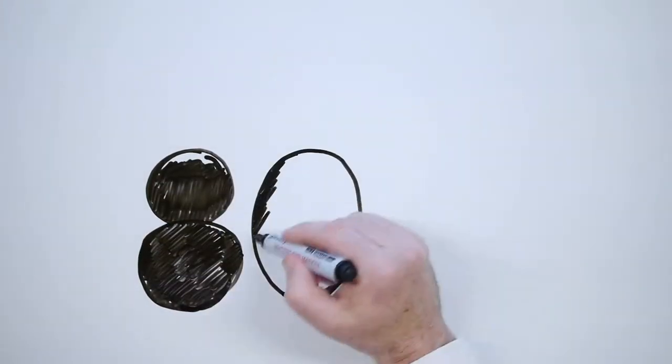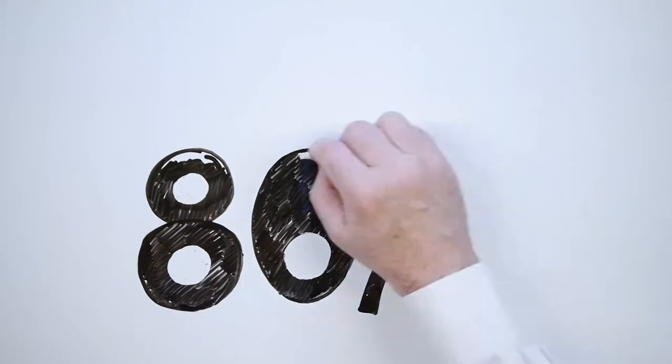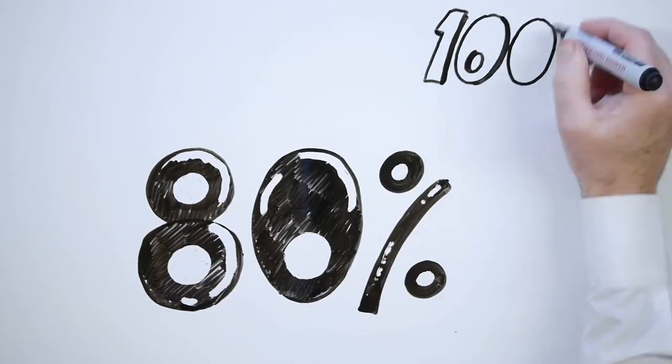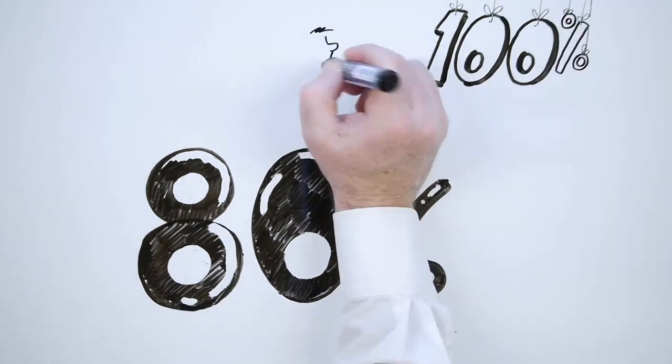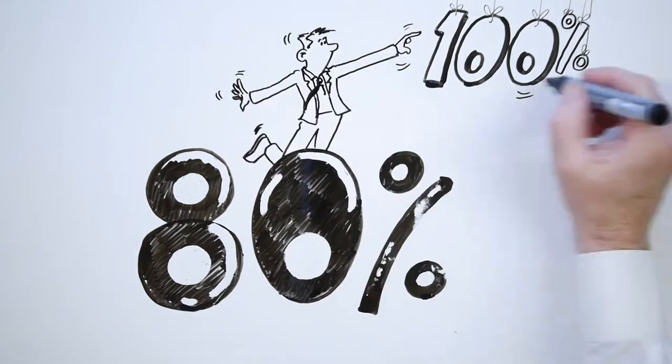Pareto's law, otherwise known as the 80-20 rule. I've been told that 80% of output is produced by 20% of the input, but I don't want 80%. As the VP of IT, I'm always aiming for 100%.